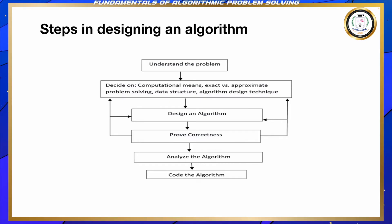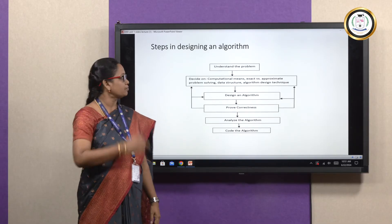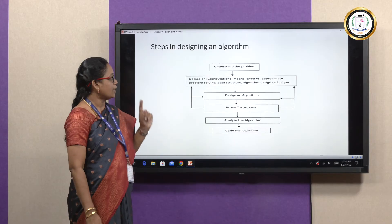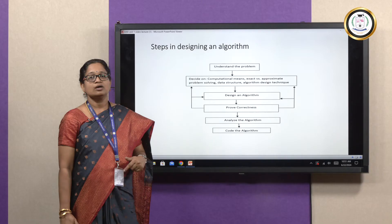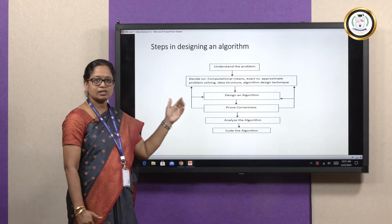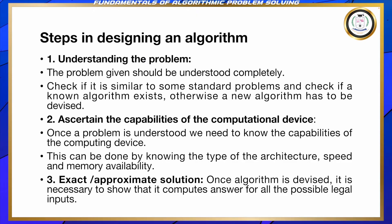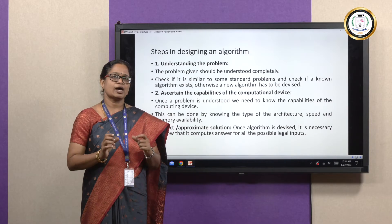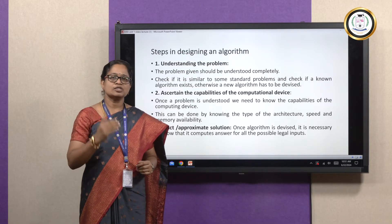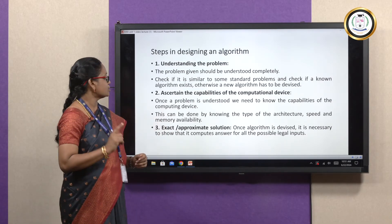Next, we are going to learn the steps in designing an algorithm, given through a flowchart. These steps are: understanding the problem, decide on the computational means, designing an algorithm, proving the correctness, analyzing the algorithm, and then coding the algorithm. The first and foremost step is understanding the problem — a given problem should be understood completely and clearly.